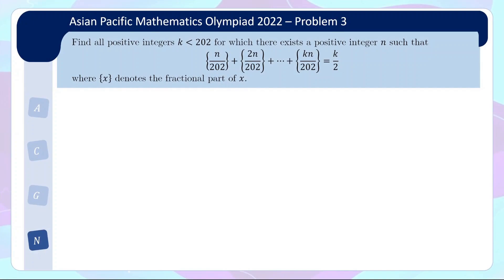For this problem, we are supposed to find all positive integers k less than 202, for which there exists a positive integer n that solves this equation.